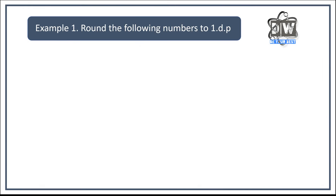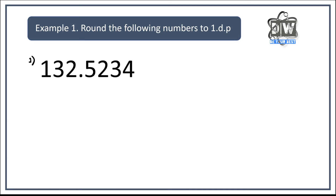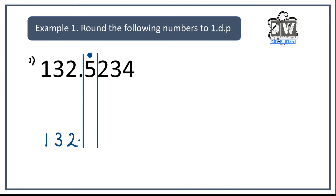Let's look at rounding to one decimal place. All that means is our answer will have one number after the decimal. We identify that first digit after the decimal point, then we 'column' it — we put that number in between two lines. The rule with rounding is: all the numbers before the column will stay the same. All the numbers after the decimal place will always turn into zeros. It's only the number in the column that will either stay the same or go up in value by one.